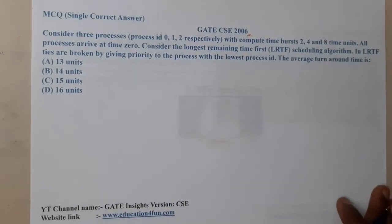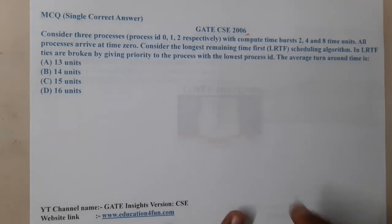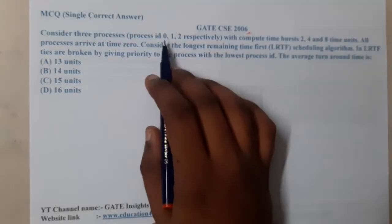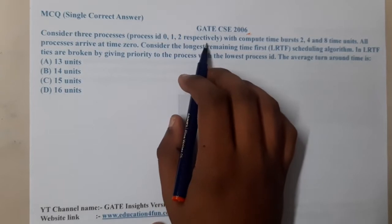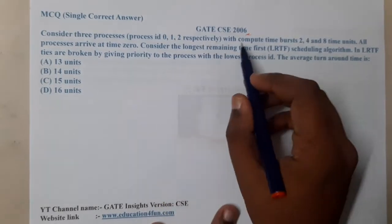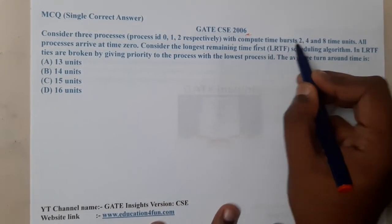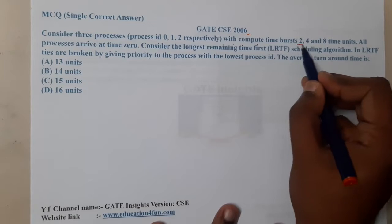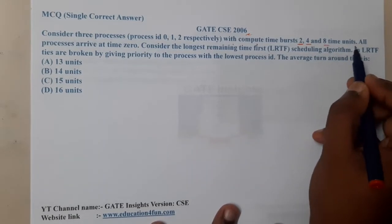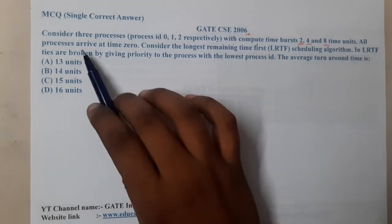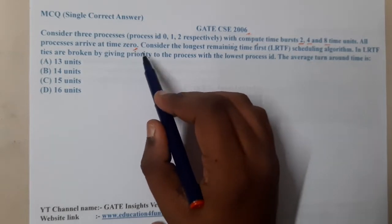The given question is: consider three processes, process IDs 0, 1, and 2 respectively, with compute time burst as 2, 4, and 8 time units. All processes arrive at time 0.